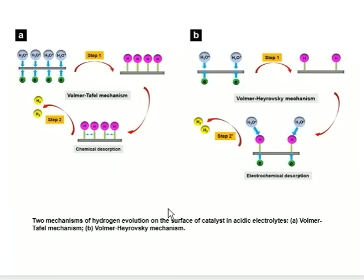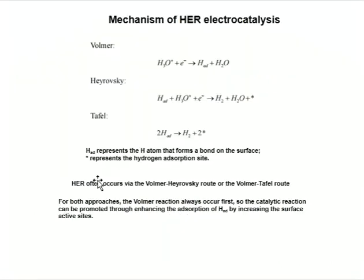This shows the two mechanisms of hydrogen evolution on the surface of a catalyst in acidic electrolyte. The left is the Volmer-Tafel mechanism and the right is the Volmer-Heyrovsky mechanism.